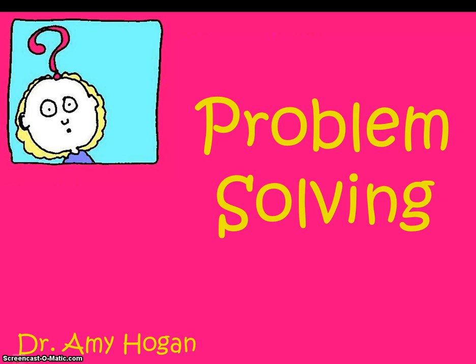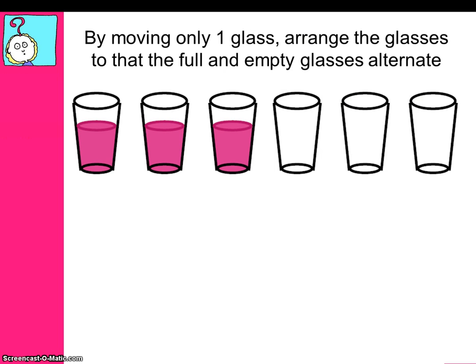Let's talk about problem solving. I'm going to start off by giving you a couple of problems to solve. Look at the arrangement of the glasses below. By moving only one glass, you have to arrange the glasses so that the full and empty glasses alternate. Pause the video for a few seconds while you come up with a solution.